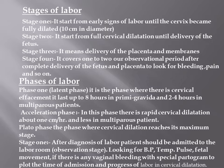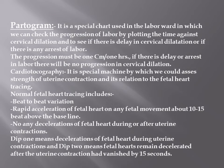What does the patient need during observation in the first stage? We monitor contractions, fluid status, blood pressure, pulse, and temperature. We check for any vaginal bleeding. And at the same time, we use the partogram — a special chart used in labor in which we check the progression of labor by plotting time against cervical dilatation. If there is a delay in cervical dilatation or any signs of arrest of labor, action must be taken.